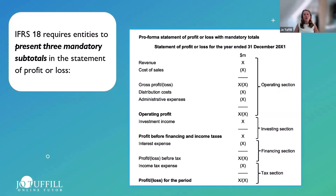IFRS 18 requires entities to present three mandatory subtotals in the statement of profit or loss. The operating section runs from revenue down to operating profit, which is the first mandatory subtotal — one that was not mandatory prior to IFRS 18. Operating profit is a key figure used by most ratios; for example, ROCE uses profit before interest and tax. The cash flow statement also starts with operating profit, so making it mandatory going forward is significant.